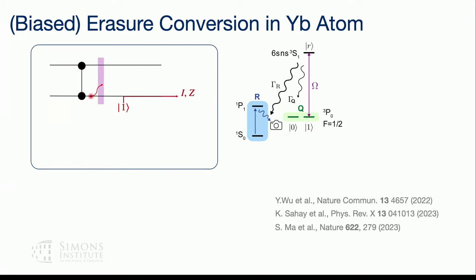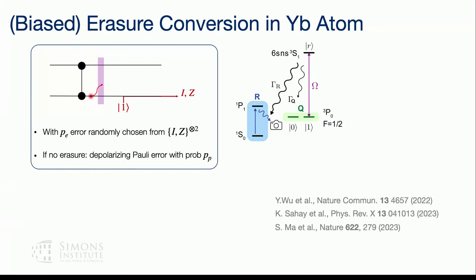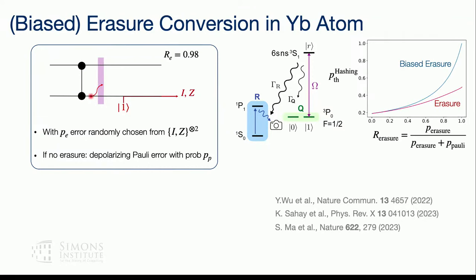After every two-qubit CZ gate, there's a chance the Rydberg state decayed. You apply a pulse to detect whether this happened. If you detect leakage, you replace the atom with a fresh one in the one-state and move on. The overall error model has some probability pe of erasures. When there is an erasure, that's equivalent to an I or Z error with 50% probability. If there is no erasure, there's still a small probability of a Pauli error. In our paper, we predict an erasure fraction of about 98% — meaning 98% of all errors are detectable erasure errors and only 2% are Pauli errors. The detection pulse is mid-circuit and doesn't affect the qubit subspace since they are far detuned.